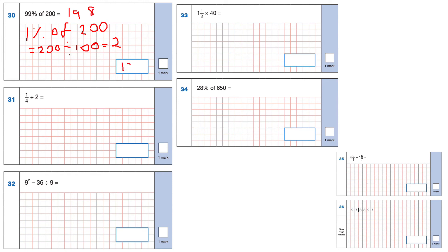Question 31: a quarter divided by 2. Dividing by 2 means we flip the second fraction and multiply. Flipping 2 gives 1/2. Multiply the numerators: 1 times 1 is 1; multiply the denominators: 4 times 2 is 8. The answer is 1/8.